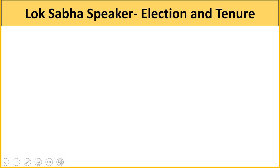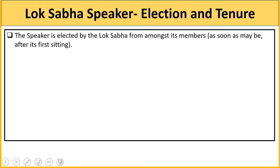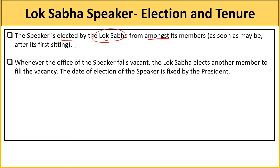Lok Sabha Speaker ke election aur tenure ko samajhte hain. Speaker ko directly Lok Sabha khud elect karti hai - apne andar se ek member choose karke speaker banaya jaata hai. Jab bhi Speaker ka office vacant ho jaaye, Lok Sabha doosra member elect kar leti hai. Jo election hota hai Speaker ka, uski date kaun fix karta hai? President fix karta hai - yeh bahut important point hai, yaad rakhna. Directly exam mein puchha ja sakta hai.